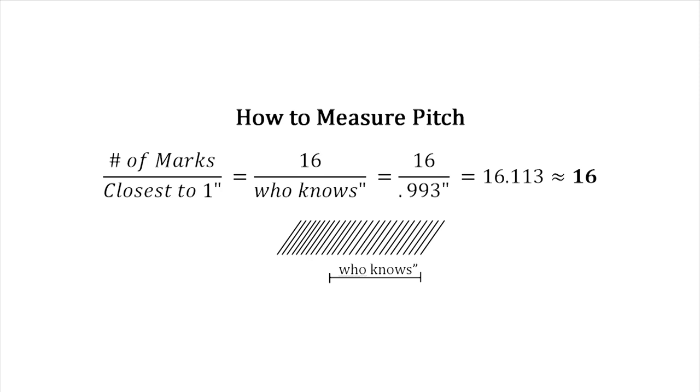Then just drag the roller on a piece of paper and take your calipers and measure how many marks are made over the course of an inch. Sixteen marks on a piece of paper came up to about 0.993 inches, which means I'm pretty close to being 16 teeth per inch.